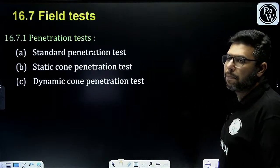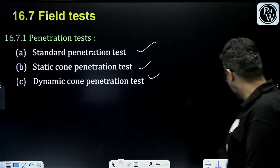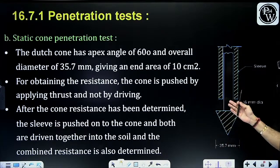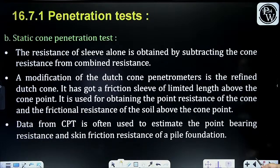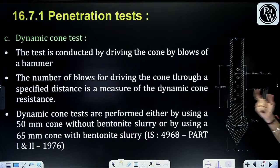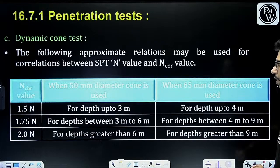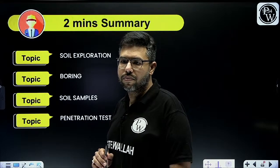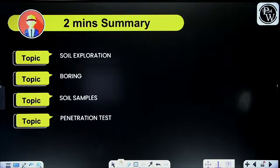Lastly, penetration tests. SPT test has already been covered in detail. Static cone penetration test is similar to SPT but instead of a split spoon sampler, a cone is used - the testing procedure is the same. Dynamic cone penetration test also records skin friction. These tests are not very important for GATE; if you want, you can read about them but they are not critical. This was all about soil exploration.